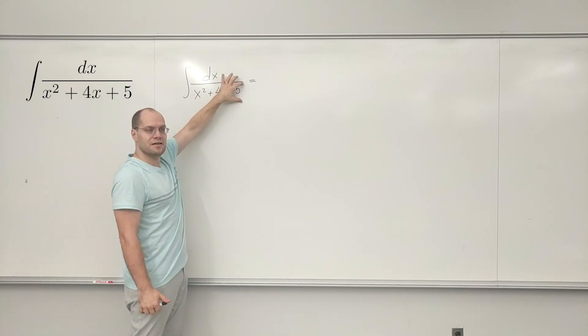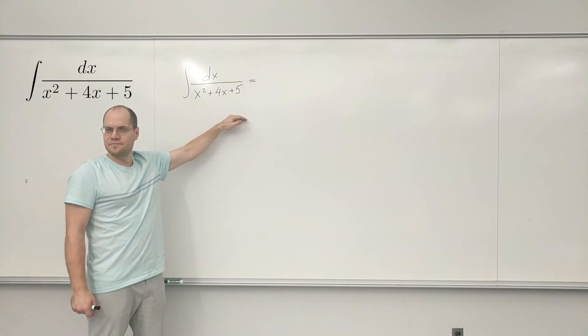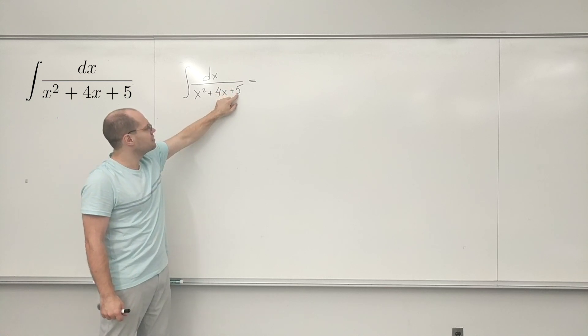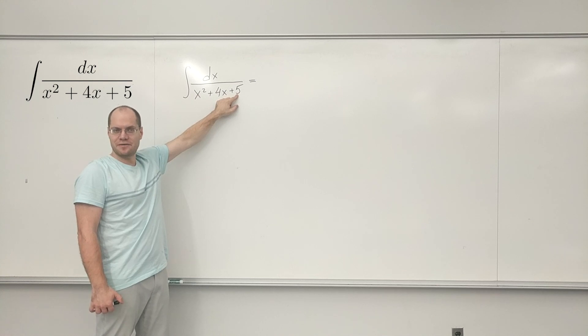Because you should look at this polynomial and realize that it cannot be factored. Why can it not be factored? Because if there was a 4 instead of this 5, you would have a perfect square on the bottom.